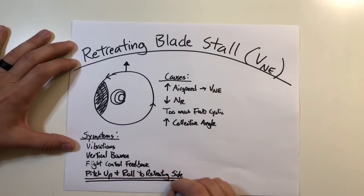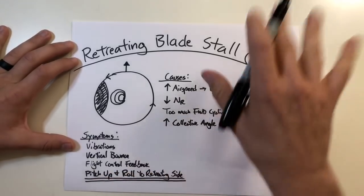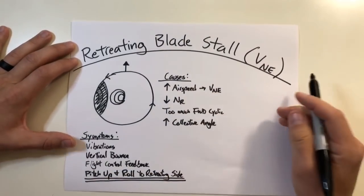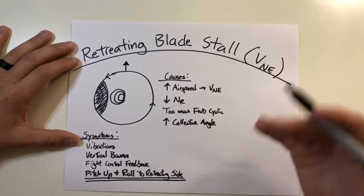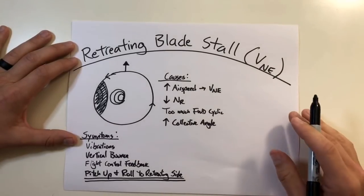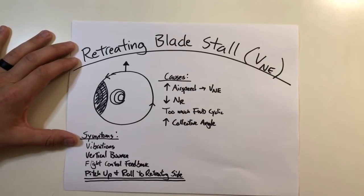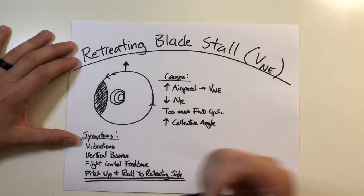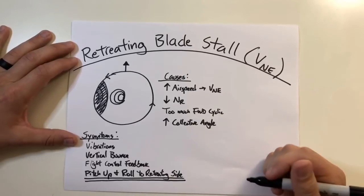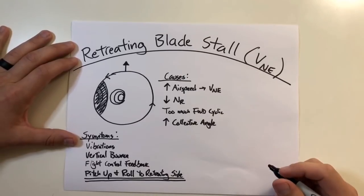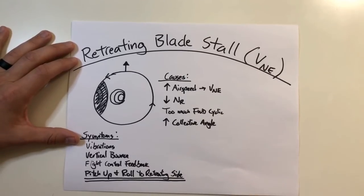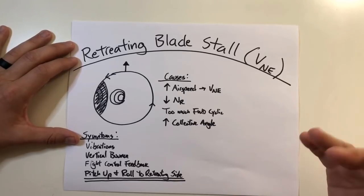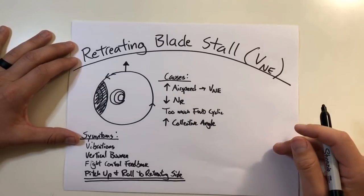This is the big one. This pitching up and rolling to the retreating side is uncommanded and you may not be able to correct it for a little bit until the helicopter straightens itself out. You are in essence losing helicopter control at this point, which is the last thing you want — especially if you're in a situation where buildings or obstacles are nearby that you absolutely need control of the helicopter to avoid.